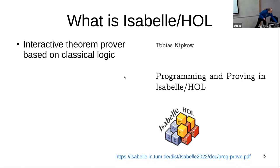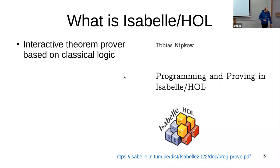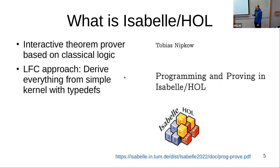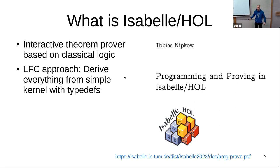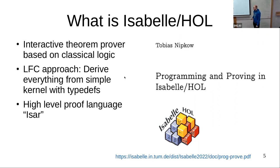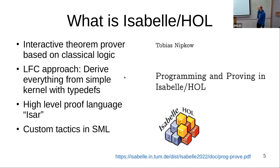Isabelle is an interactive theorem prover mainly developed by Lawrence Paulson. It is based on classical logic, in contrast to Coq or Agda with dependent types. It strongly encourages deriving everything from very simple core pieces — there are no built-in data types. All data types are defined basically by typedefs which are subtypes defined by some predicate. It features a high-level proof language that makes reading proofs easier, and you can write custom tactics in standard ML.